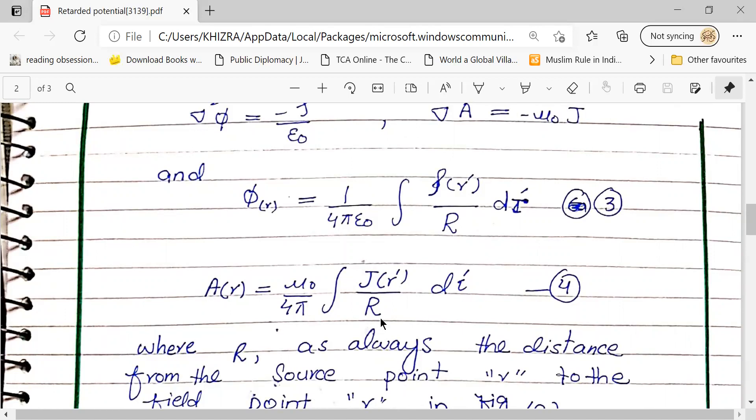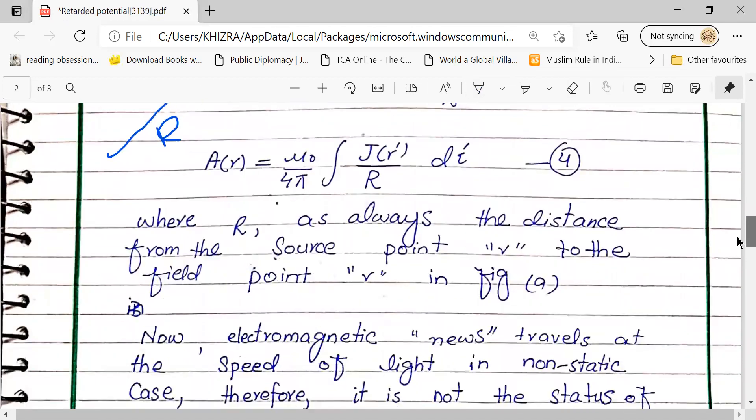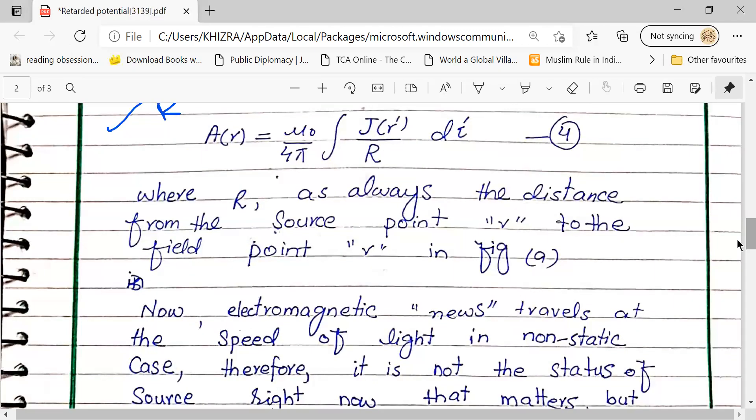Where r is always the distance from source point to field point r dash, as shown in figure A.